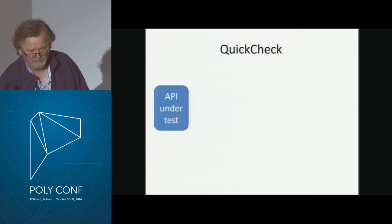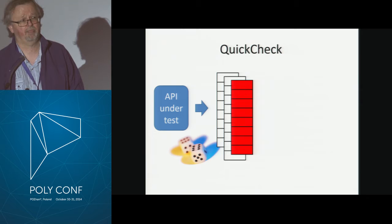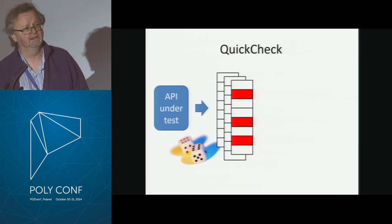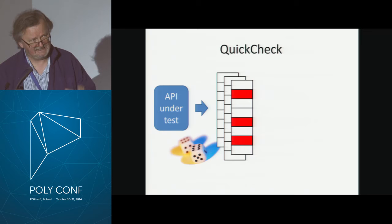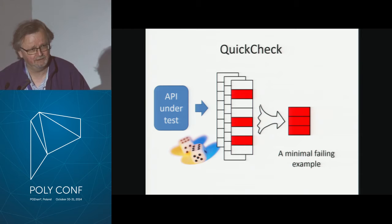What does QuickCheck do in the most common use? We have some API that we want to test, and we generate random test cases that are sequences of calls to the API. We keep doing that until one of them fails. When a test fails, especially a randomly generated test, it's usually not because of everything in that test case — usually it fails because of just a few of the API calls. So QuickCheck does a search to identify those few responsible calls and simplify the test case down to a minimal failing example, and that's what we report to the user.